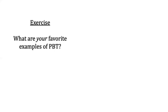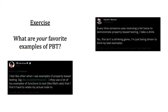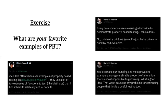Let me talk about how PBT is traditionally presented. Here's Julia Evans, a popular writer about systems, commenting that examples of PBT often use toy examples like math.abs that are hard to relate to actual code. And David McIver, author of Hypothesis, says: 'Every time someone uses reversing a list twice to demonstrate PBT, I take a drink' — being driven to drink by bad examples. He specifically calls out founding examples that are non-generalizable properties of functions that are very hard to get wrong. There is a general dearth of good examples for motivating this problem.